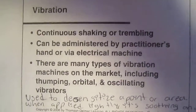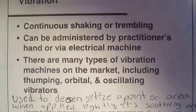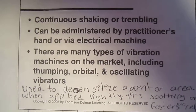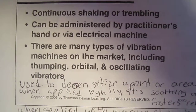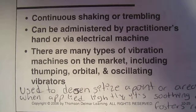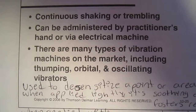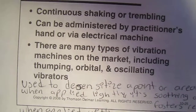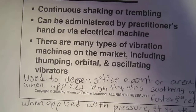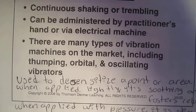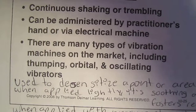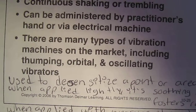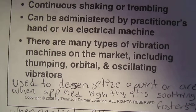Vibration. Continuous shaking or trembling can be administered by the practitioner's hands or via an electrical machine. There are many types of vibration mechanics on the market, including trombine and orbital oscillation vibrations. Used to stimulate a point or area. When applied lightly, it is soothing and promotes stress relaxation. When applied with pressure, it is stimulating.